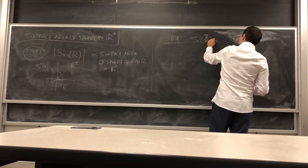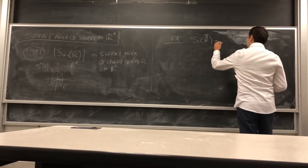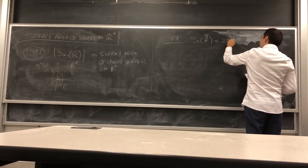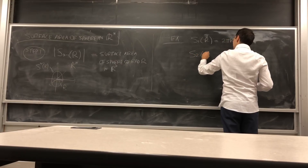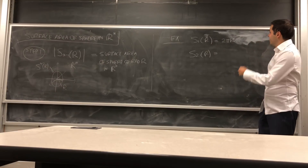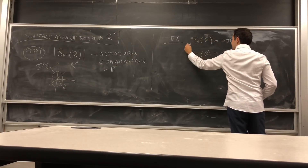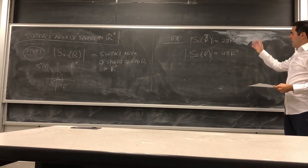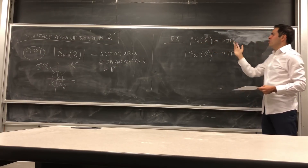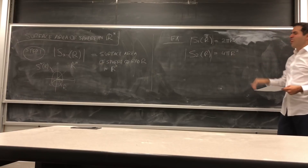For example, S1 of R is a sphere of dimension one, which is just a circle, and its surface area — i.e. the perimeter — is 2πR. Similarly, the two-dimensional sphere is the one we know from R3, and its surface area is 4πR². Notice the surface area always scales like R to the n minus one.